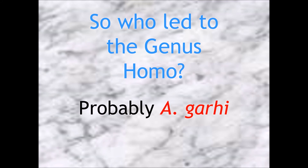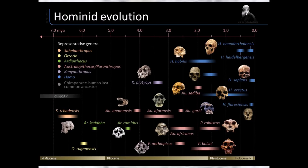Who led to genus Homo? Most likely Australopithecus garhi — though I hesitate to use the term 'missing link.' Truth is, we're missing most of the chain. Each fossil represents an individual used to represent an entire species, sometimes an entire genus. To say there is a single missing link is an absolute misinterpretation of the data — there are more missing links than actual links in the chain.